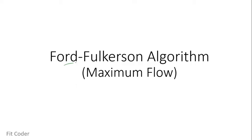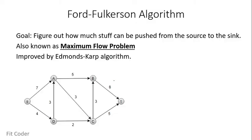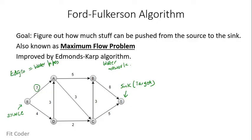In this video I will be discussing the Ford-Fulkerson algorithm. It is used to solve the maximum flow problem. The goal is to find out how much stuff we can push from the source to the sink. Given a flow network, S is our source vertex and T is our sink vertex. Let's take a real-life example: this represents a water network where all edges are water pipes and the edge weight is the maximum capacity of that pipe. So the pipe from S to A has a maximum capacity of 7, and the pipe from A to B has a maximum capacity of 5. Our goal is to find how much water we can effectively push from source to sink.